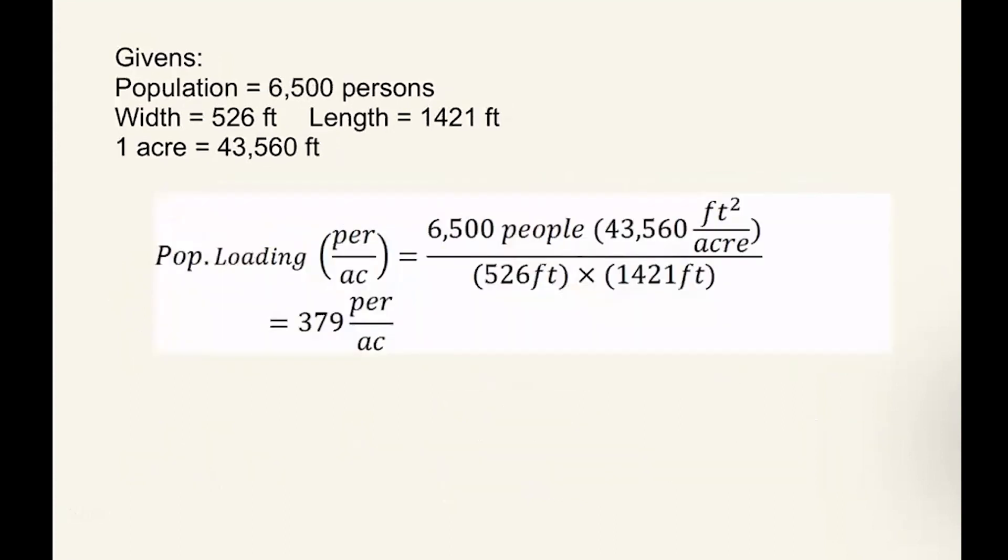Here we just had solved it in advance, and this is another way to do it by just adding the conversion factor directly to the equation. So you can multiply 6,500 people times the conversion factor and divide it by the surface area equation and you get approximately the same answer of 379 people per acre.